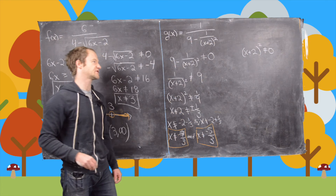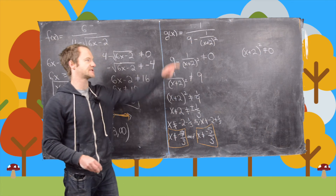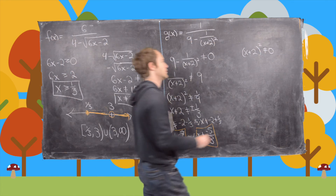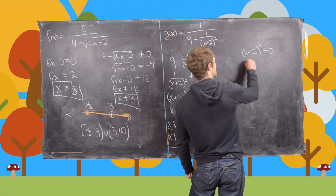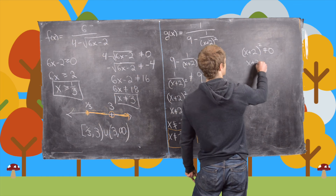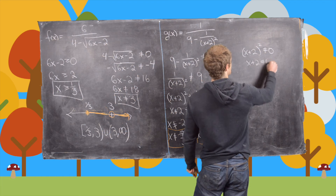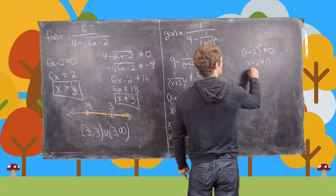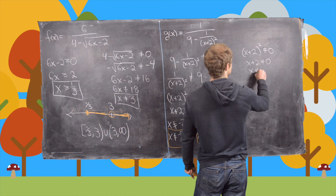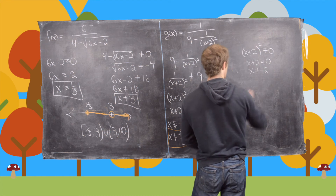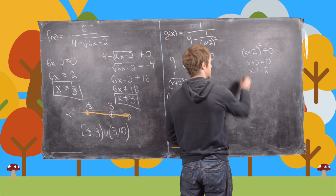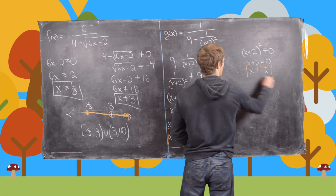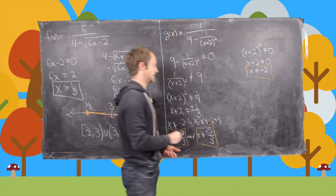Now let's look at the second condition. Taking the square root of (x plus 2) squared not equal to 0 gives us x plus 2 is not equal to 0, which means x is not equal to negative 2. So there's our third excluded value.